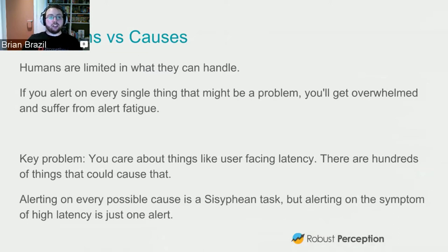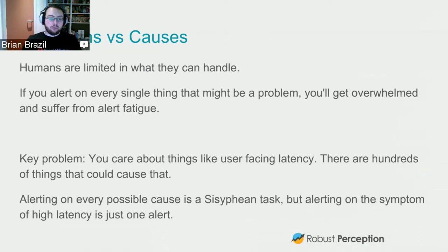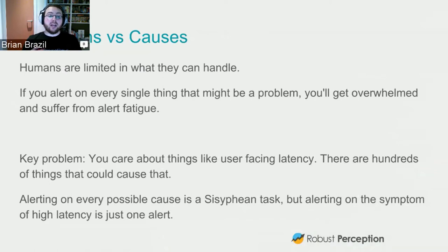We're engineers and we should treat problems like engineers. The key insight is that you care about user-facing latency, and there are hundreds of things that could cause that — a machine failing, a rack switch being slow, lost power, routing changes going the long way around Europe. You cannot possibly alert on every single one of those — there are hundreds, maybe thousands, and you'll miss some. However, what you care about at the end of the day isn't that a rack switch failed; it's that the user is having a bad experience. If you can alert directly on the user having a bad experience, that's just one alert and it catches a multitude of real problems.